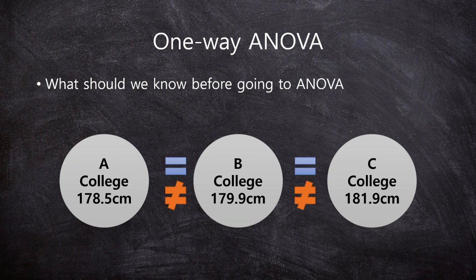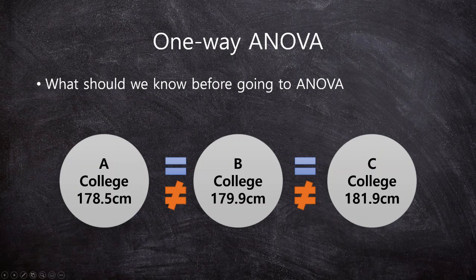The ANOVA is like this. When you have three colleges — college students, especially male students' height — we want to compare these three college students' male students' height. We cannot use the multiple t-test. We have to use the one-way ANOVA.